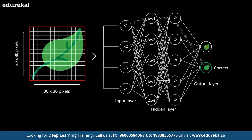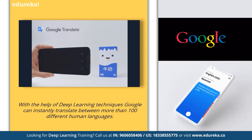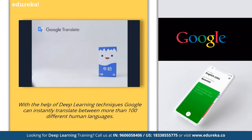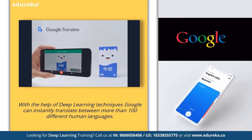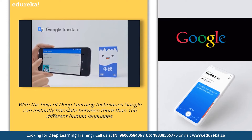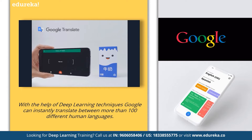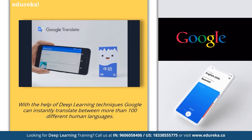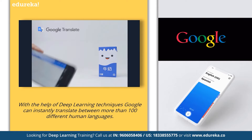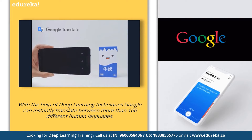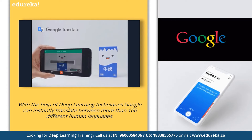Now let's discuss a few real-world applications of neural networks. With the help of deep learning techniques, Google can instantly translate between more than 100 different human languages. Visual translation is an interesting application — it can identify images that have letters, turn them into text, translate them, and then recreate the images with the translated text. Google has an app for this purpose called the Google Translate app.